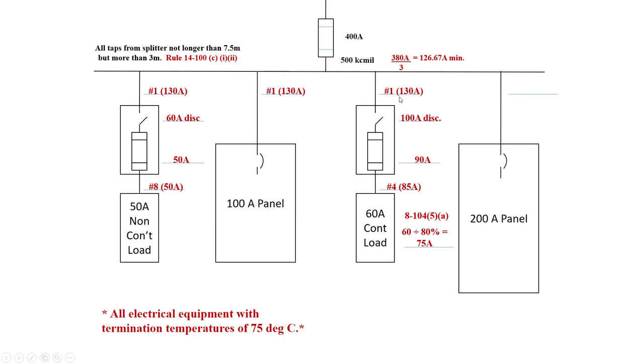The last one, the 200 amp panel - to safely carry this load, we would have to go to table 2 and look up under the 75 degree column 200 amps. We would have to pull three aughts out, rated at 200 amp. The 200 amp exceeds the one-third, so we're good to go. This one sized based off the load and it exceeds the one-third of our 500 KC mil. Hopefully that helps you out. We'll see you on the next video.